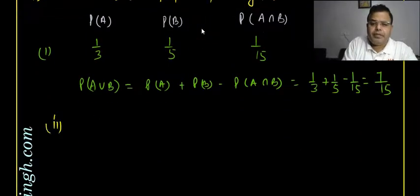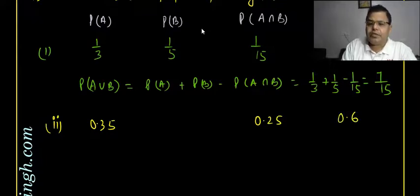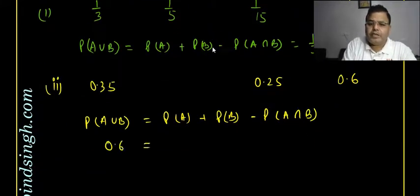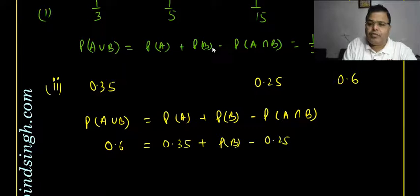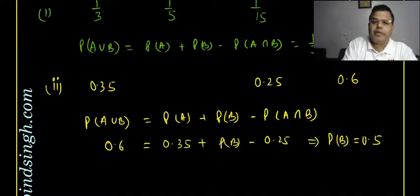The second part gives P(A) = 0.35, P(A ∩ B) = 0.25, and P(A ∪ B) = 0.60. We need to find P(B). Using the same formula: 0.6 = 0.35 + P(B) − 0.25, so P(B) = 0.6 − 0.35 + 0.25 = 0.5.